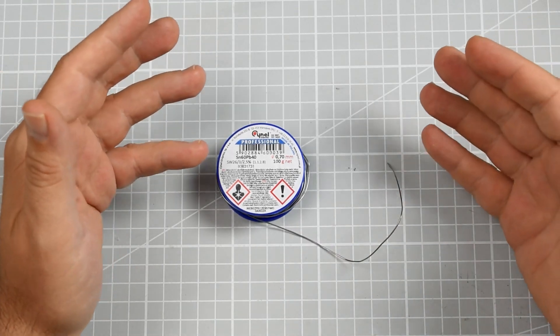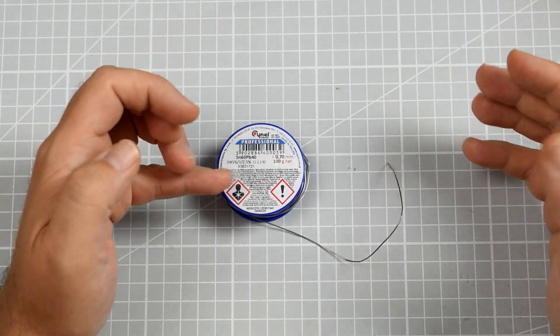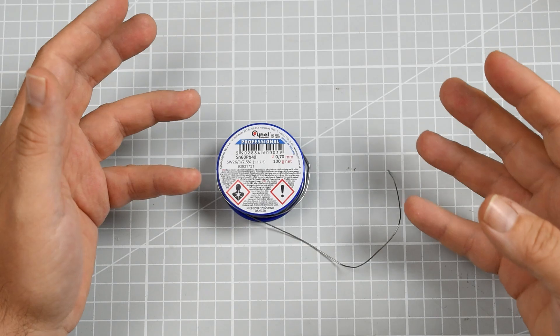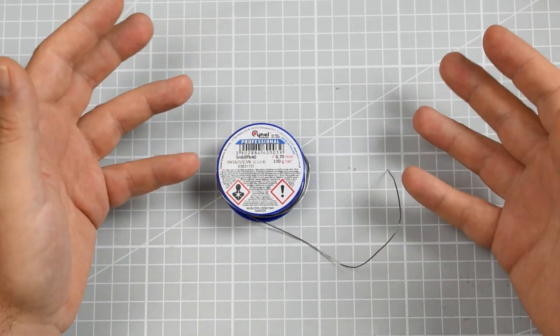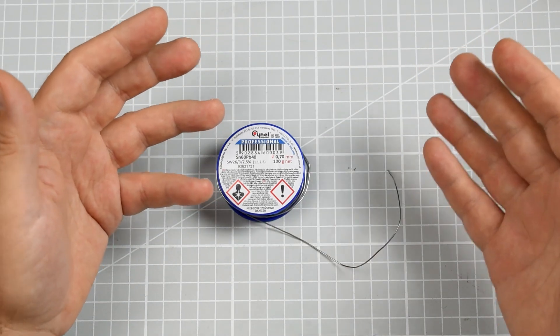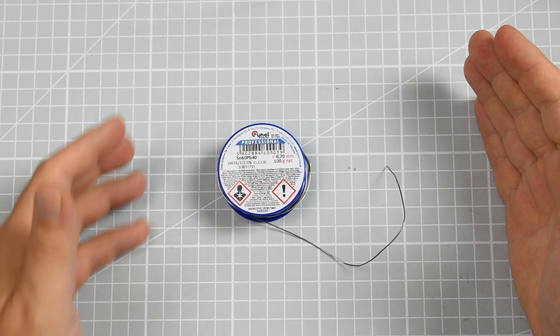For amateur purposes, solder with lead is better because it has better properties. It just flows nicer, covers elements nicer. It's easier to achieve a nice joint with leaded solder than with leadless solder.